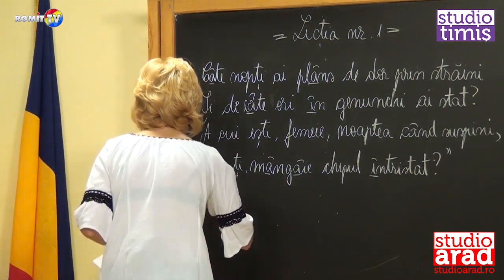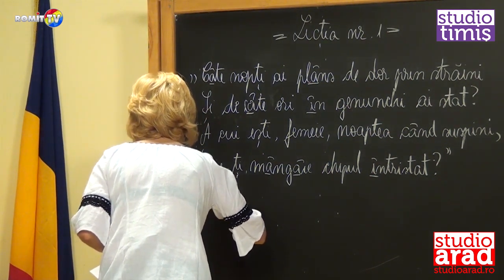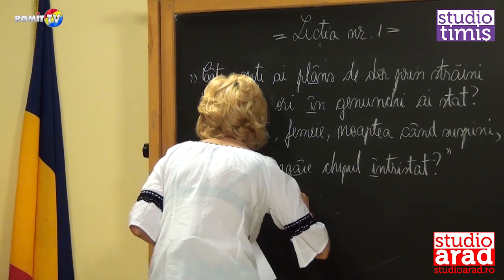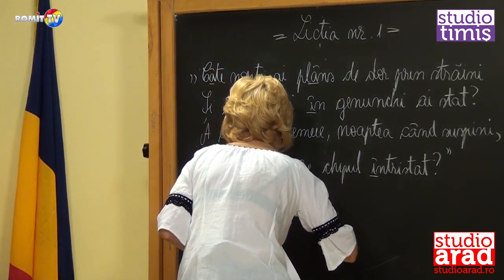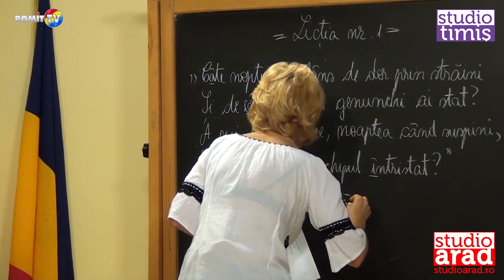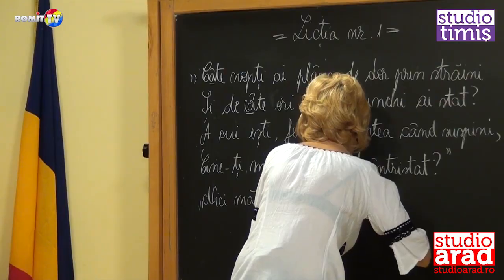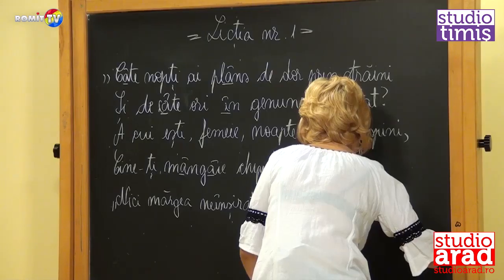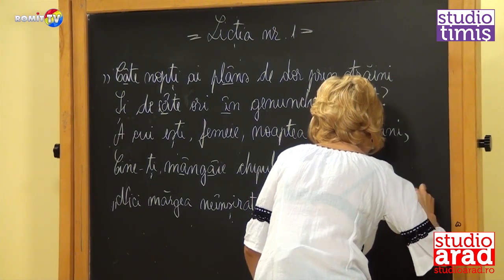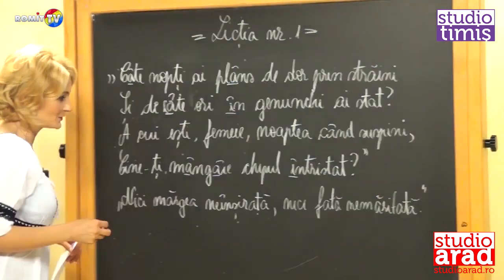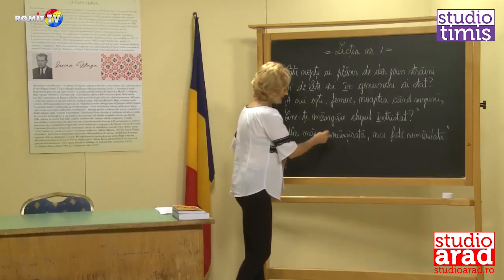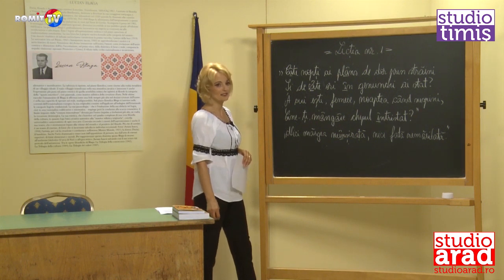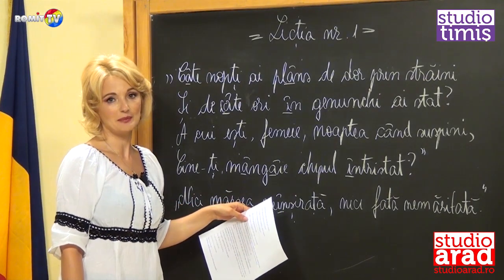'Nici mărgea neînșirată, nici fată nemăritată.' I have put quotation marks again because it is a proverb. Let us see where Î appears here. We have the exception to the rule: 'neînșirată' is written with Î from I because in front of the word 'înșirată' we have the prefix 'ne.'